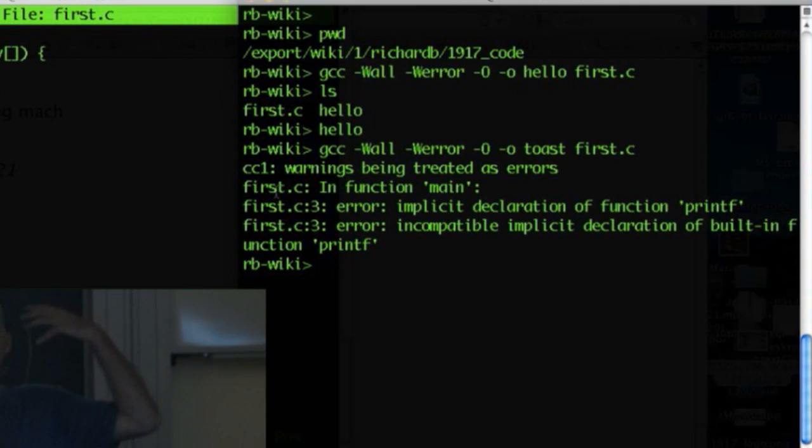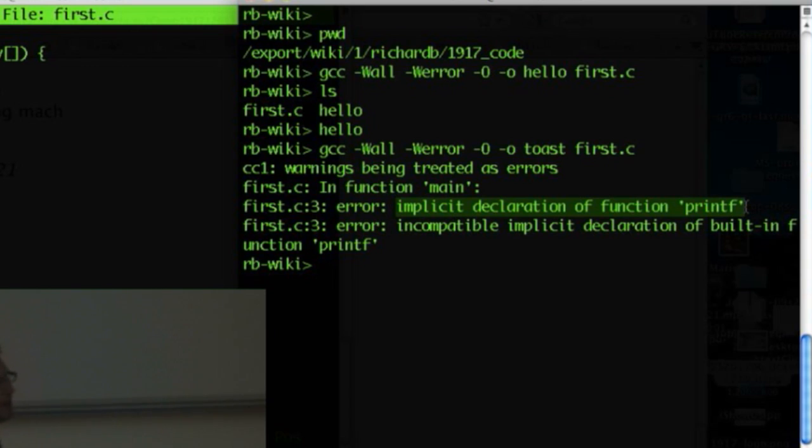And I just look carefully in a relaxed state of mind. I don't get freaked out because I'm used to getting errors. I look and think, hmm, are there any clues here about what particular thing I've done wrong? Implicit declaration of function printf. Implicit means you're just expecting something that's not there.